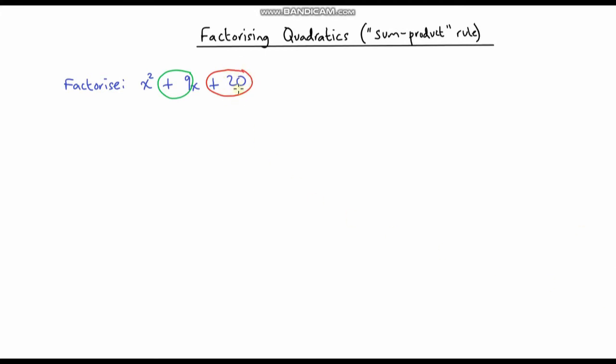So two numbers that multiply together to get 20 and add together to get 9. We think about the factors of 20: we've got 1 and 20, we've got 2 and 10, and we've got 4 and 5. These are all the factors of 20, but which one of these pairs gives us a sum of 9? Hopefully you can clearly see that it is these two numbers here - 4 plus 5 does indeed give us 9.